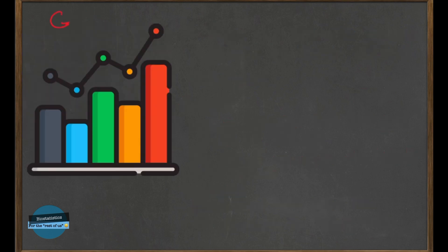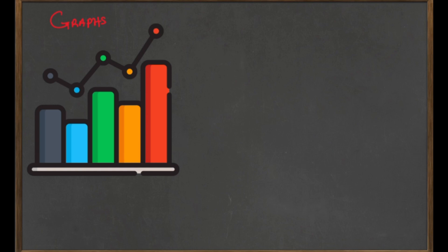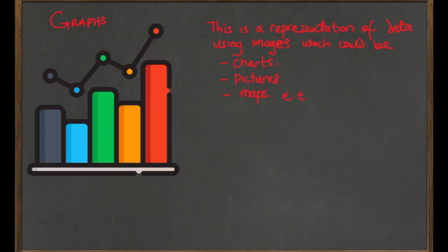Finally, we're going to be talking about graphical presentation of data — when your analyzed data is presented in the form of a chart. When we talk about graphical data representation, whereas tables can be used for presenting all the information from your analysis, graphs help you to simplify this information in a very simple way. A graph is a representation of data using images in the form of charts, maps, graphs, and plots — as long as it is in the form of an image that you can see visually, that's what we call a graph.